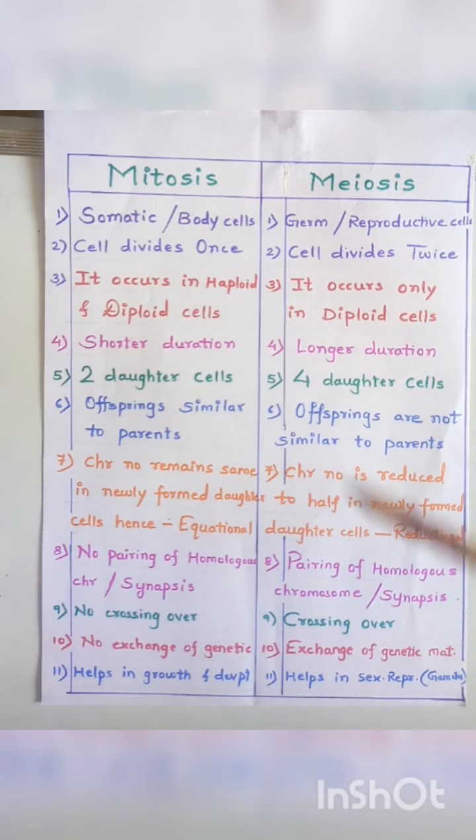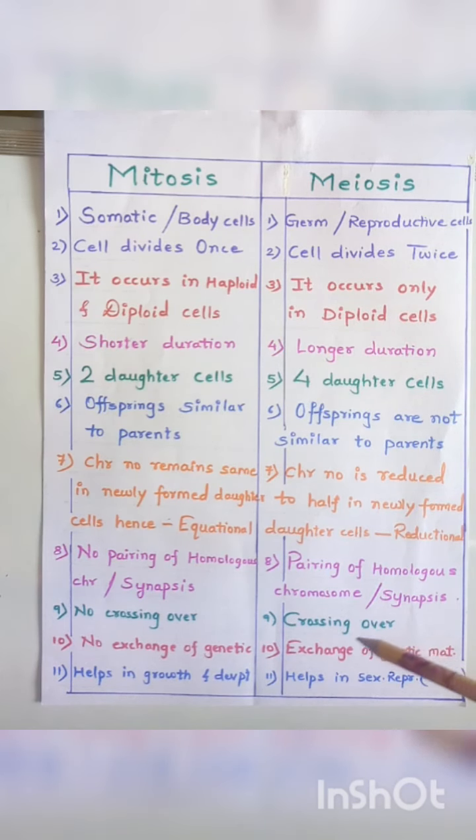In mitotic cell division, crossing over does not take place, whereas in meiosis crossing over of chromosomes takes place. The point where crossing over takes place is called chiasmata.